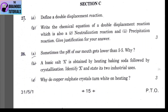Section C, question 27, Part A. I have defined a double displacement reaction. The definition is that two compounds combine and the positive and negative ions — that is, cation and anion — exchange their places and make two new products.